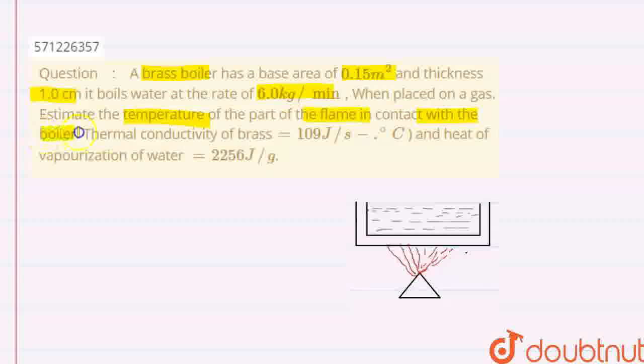That is in contact with the boiler. The thermal conductivity of brass is given as 109, and the heat of vaporization of water is given as 2256 Joule per gram.